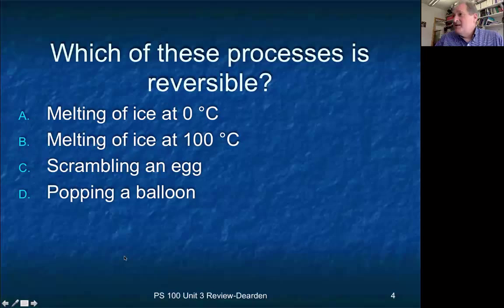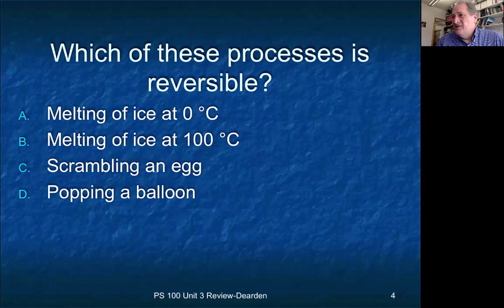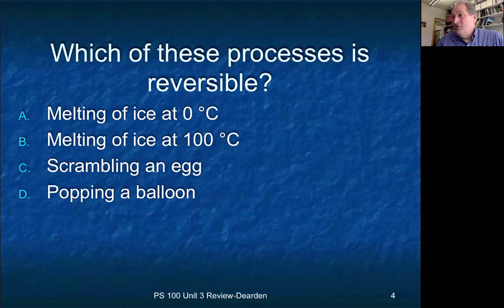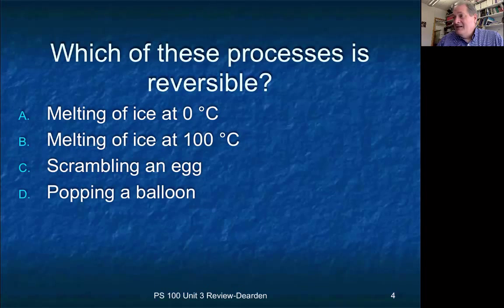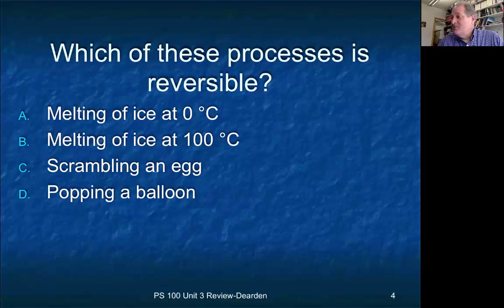This question asks which of these processes is reversible. Reversibility involves a phase change at the normal temperature of that phase change. So melting of ice at 0°C should be a reversible process — A is the correct answer. Melting ice at 100°C is not reversible; it won't re-freeze. Likewise, you can't unscramble an egg and you can't unpop a balloon.